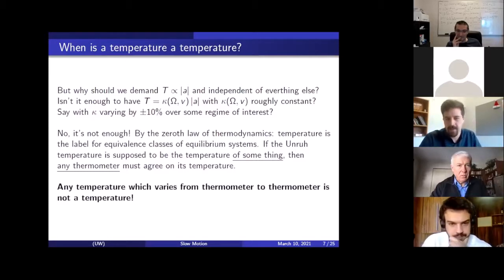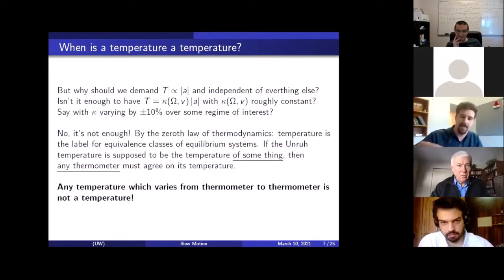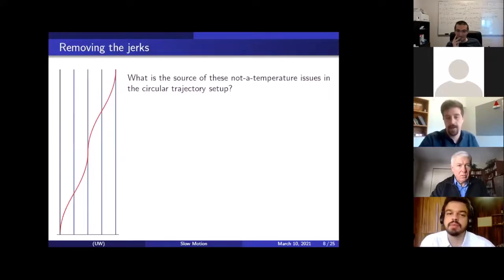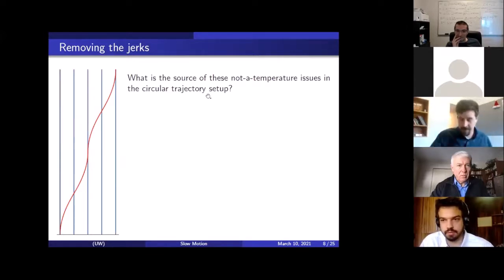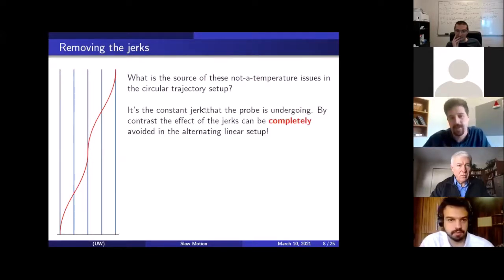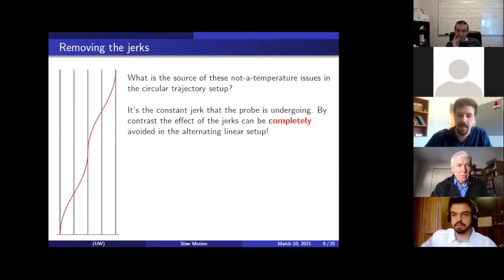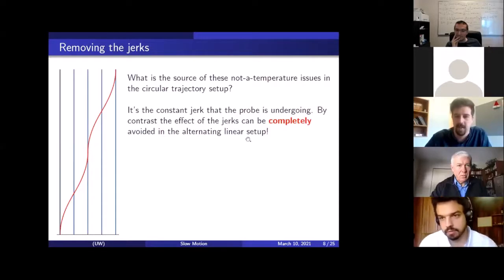And so these temperatures can't be working as described. Really, any temperature which varies from thermometer to thermometer is not a temperature, but it's not the temperature of something that you are thermalizing with. All right, so I think this is a problem with the circular proposals, and so we have a sort of alternate proposal. What is the source of these sort of not a temperature issues in the circular trajectory setup? In my mind, it is what I just introduced. It's the constant jerks that the probe undergoes. And now those were present in the linear setup as well, but what I'm claiming is that in the linear case, we can make some adjustments to completely remove these in the alternating linear setup.